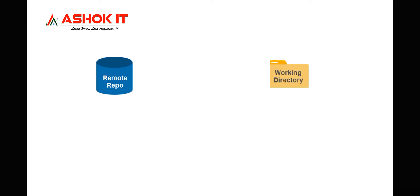We are having a remote repository. In GitHub, we will create the remote repository for our project. Every project will have one remote repository and we will have our working directory — the folder in our system where we are performing the operations. Between our working directory and remote repository, we will have a local repository, which is available in our machine.